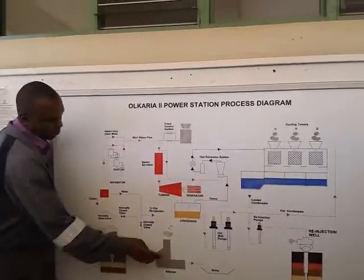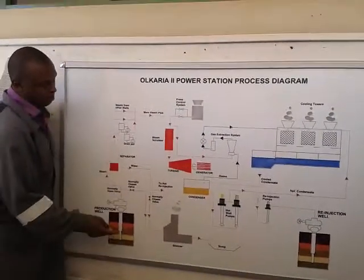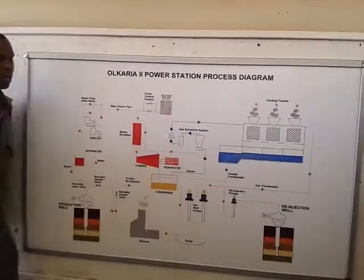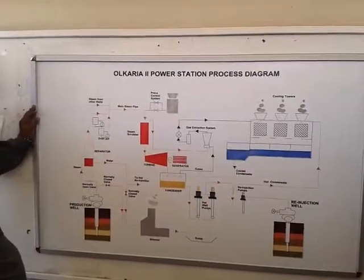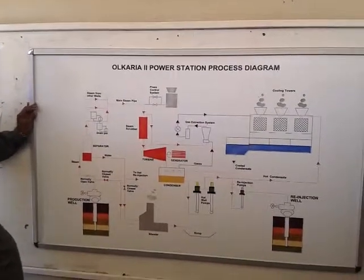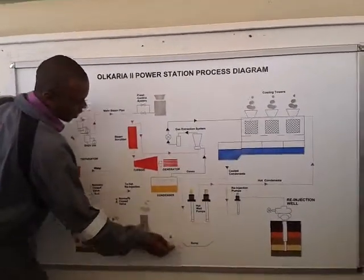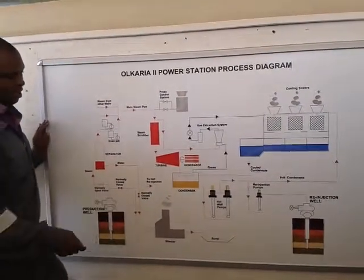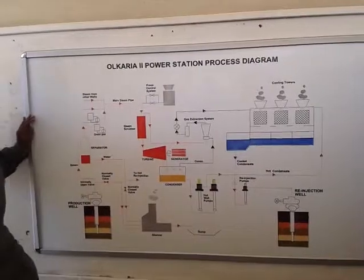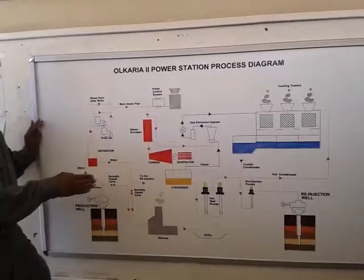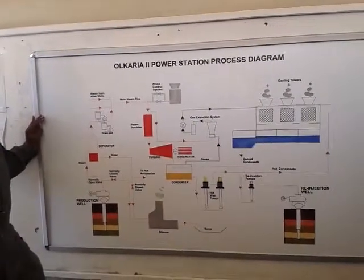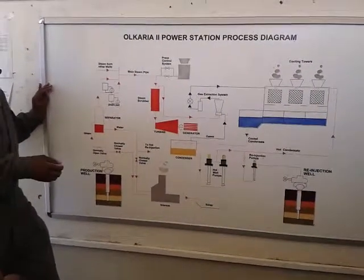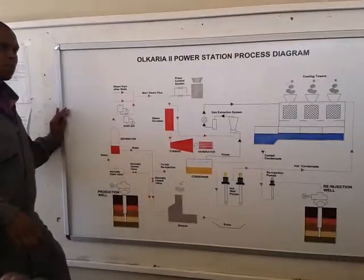Then it will be channeled to a sump via a silencer. A sump is a drainage point — the separated brine water collects there. When that sump is full, they use a mobile pump to suck that brine water and pump it into an injection well. Geothermal is a reliable source. After separating that brine water, they return it back to the ground.